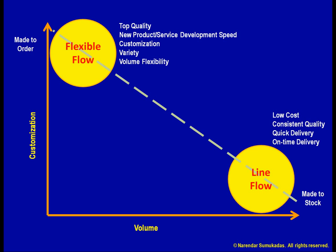As we can see, of the nine competitive priorities, some of them draw us towards a line flow process while others draw us towards a flexible flow process. If we were to focus on only one order-winning competitive priority, our decision would be quite simple. However, we are likely to have a combination of two or three order winners.